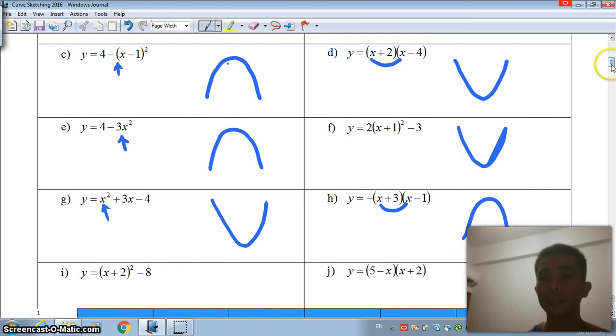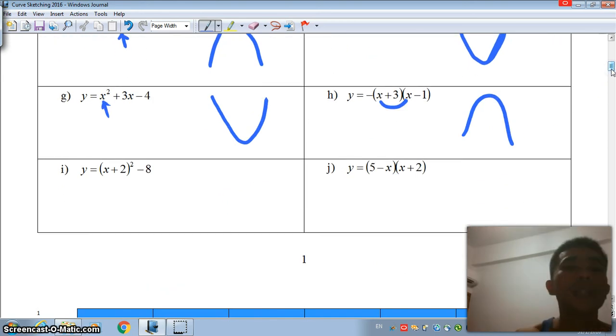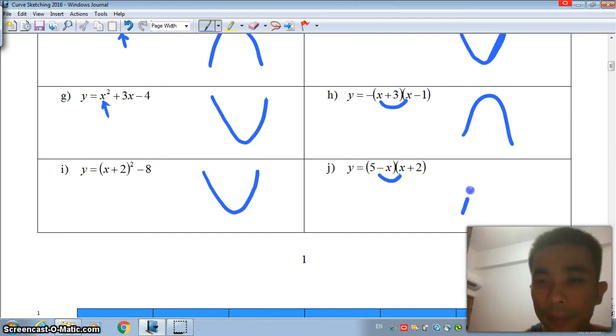The last two examples. X plus 2 bracket square, you will get an x-square. U-shape. Last but not least, a negative x multiplied by x will give us a negative x-square. N-shape. And, we are done with page 1.